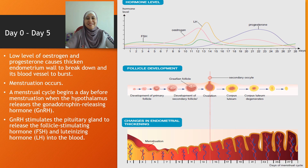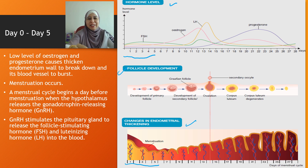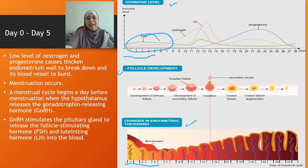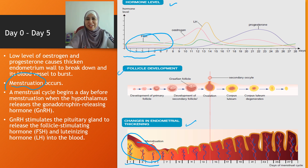Now we look at the menstrual cycle starting from day 0 to day 5. Bear in mind: the first graph is on hormone level, the second is on follicle development, and the third graph is on the thickness of the endometrium wall. From day 0 to day 5, the level of estrogen and progesterone is low, which causes the endometrium wall to break down and shed, the blood vessels burst and shed down to the vagina. This is what we call menstruation.